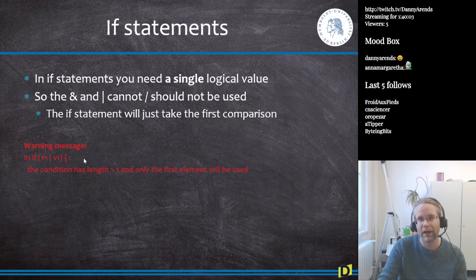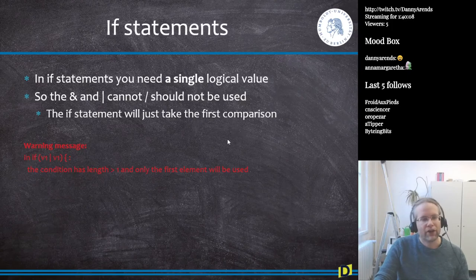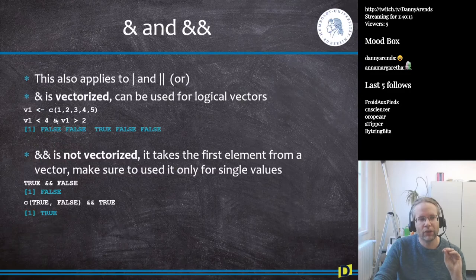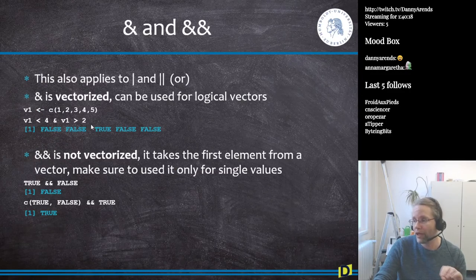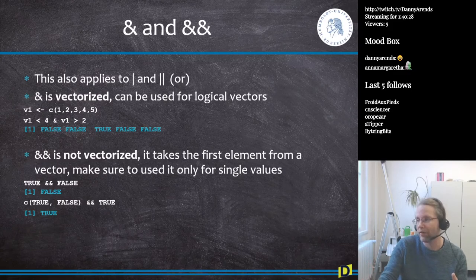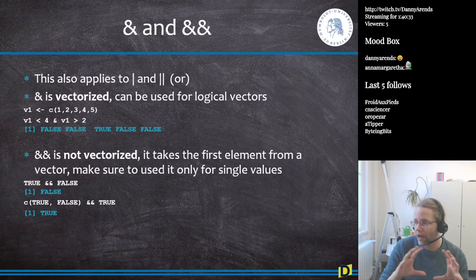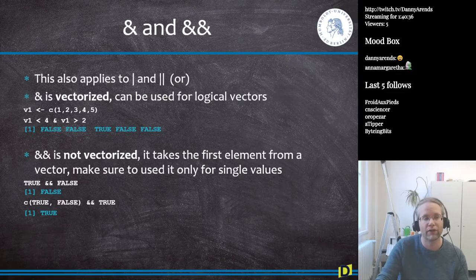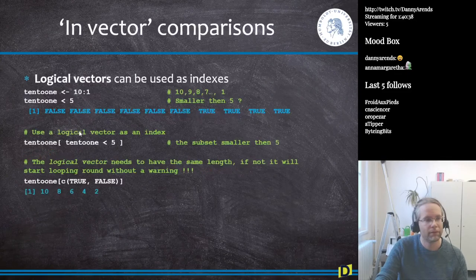If you're doing a selection from a matrix — checking if column 1 contains 'treated', column 2 is greater than 5, and column 3 is smaller than 16 — you generally use the single `&` because you want element-wise results to make a subset of the matrix.